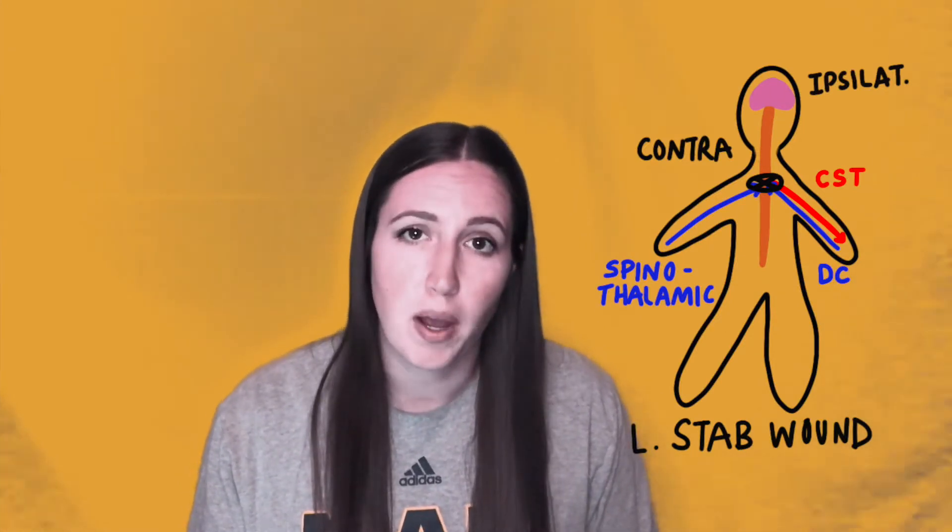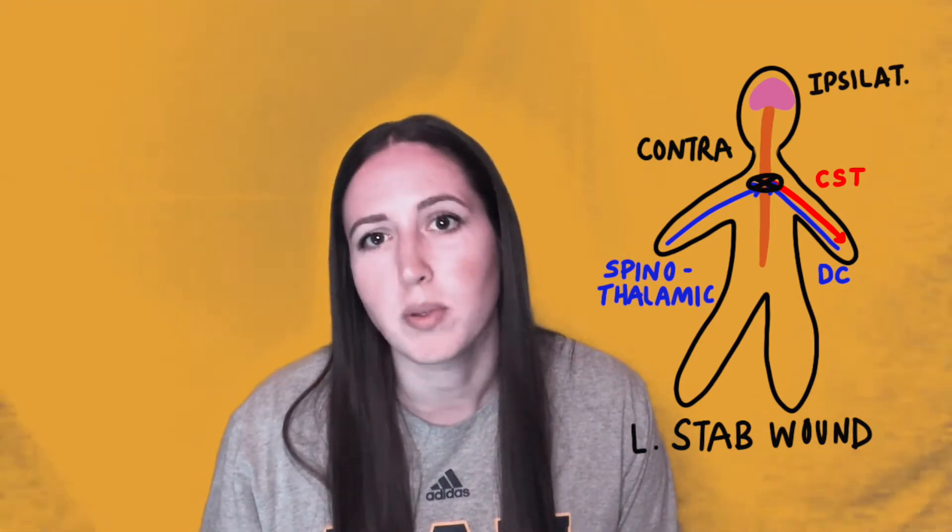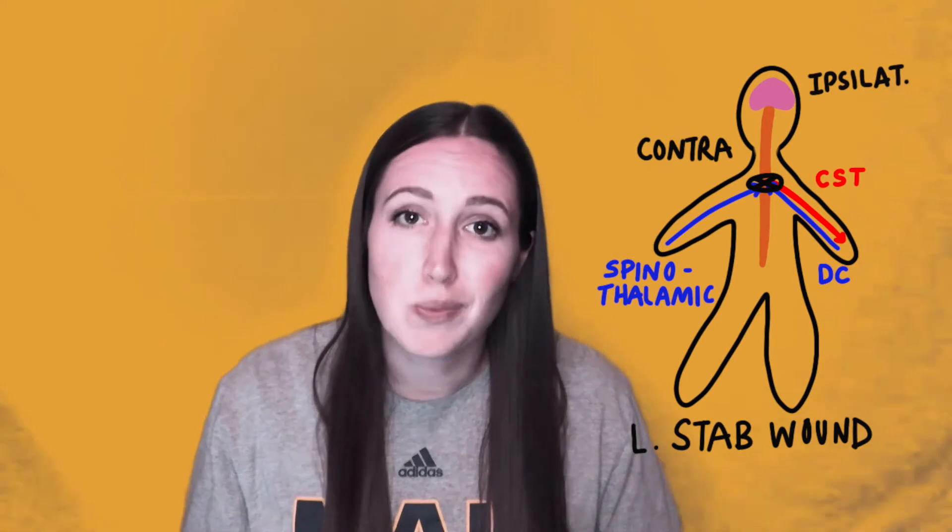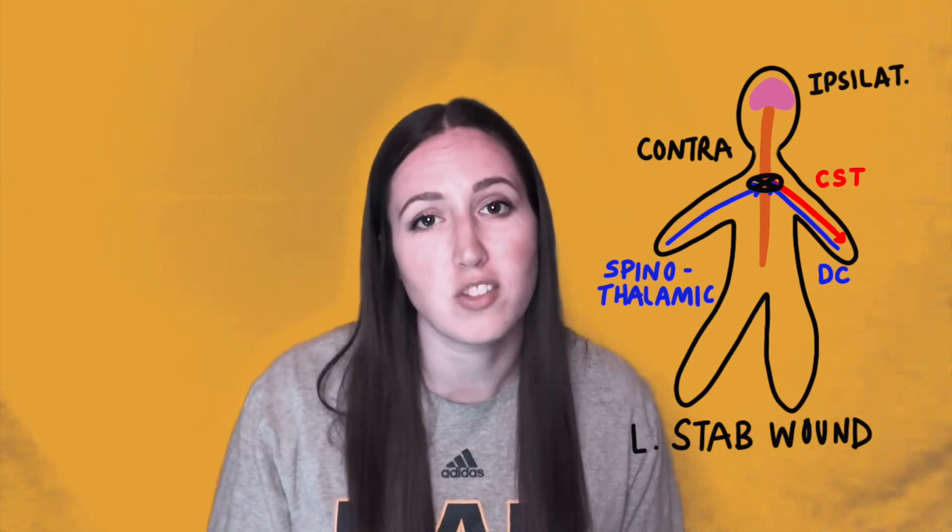With a Brown-Séquard injury, these usually occur from a stab wound that affects only the left or right side of the spinal cord. So rather than having a bilateral presentation, which is what those other three injuries are, now you only have one side of the spinal cord that's affected. If the corticospinal tract or dorsal columns are affected, you'll see symptoms on the ipsilateral side of the body below the level of injury. However, if the spinothalamic tract is affected, you're going to see its effect on the contralateral side because this tract crosses over at the spinal cord.